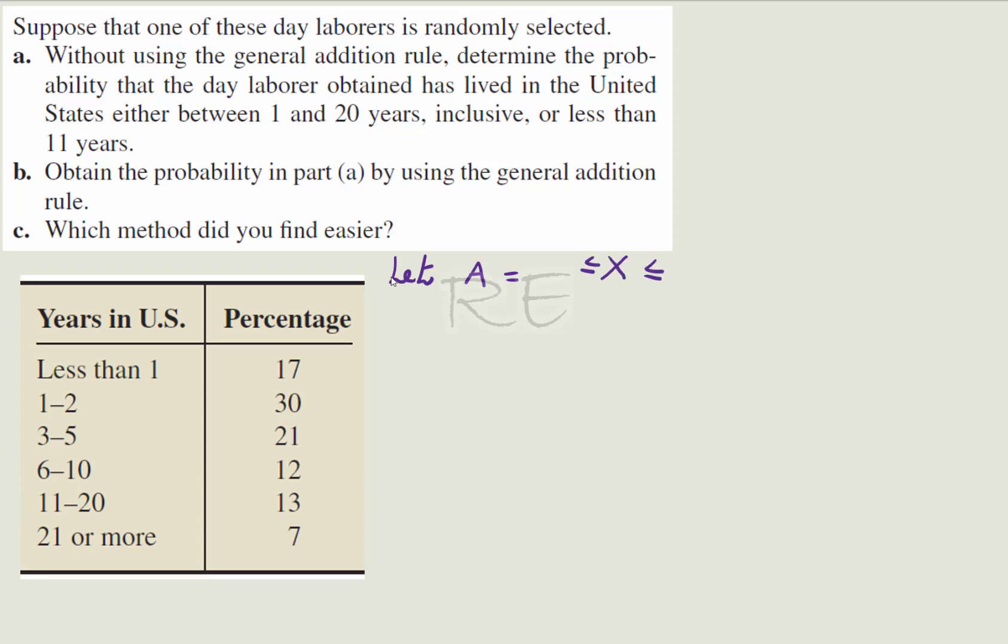Between 1 and 20 years inclusive means one is less than or equal to X less than or equal to 20. So we're going to call this event A. And we're going to call B the event that X is strictly less than 11. Strictly less than 11 means right here from 6 to 10 to less than 1.